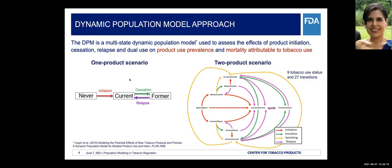The model can be used to estimate product use prevalence and mortality attributable to tobacco use for the different products defined in the modeling framework.